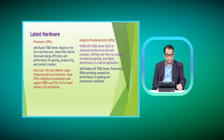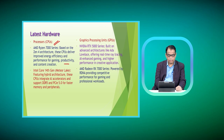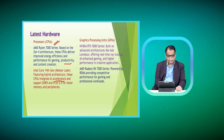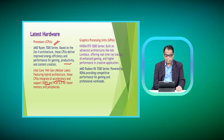There are certain latest hardware available. For processors, the AMD Ryzen 7000 series delivers improved energy efficiency and performance, used for gaming, productivity, and content creation. Intel Core 14th generation CPUs feature hybrid architecture, integrate AI accelerators, and support DDR5 for faster memory access. For graphics processing units, the NVIDIA RTX 5000 series is built on advanced architecture, and the AMD RX 7000 series is available for gaming or professional work.